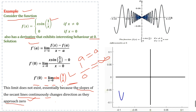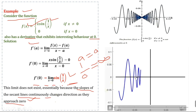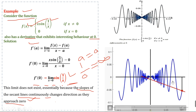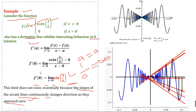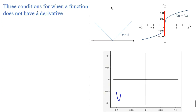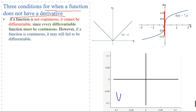Looking at the graph of this function, we plot a secant line between two points and observe that the slope of the secant line continuously changes between positive and negative values as x approaches 0. As x approaches 0, the slope of the secant line changes continuously, meaning the function is not differentiable at 0.